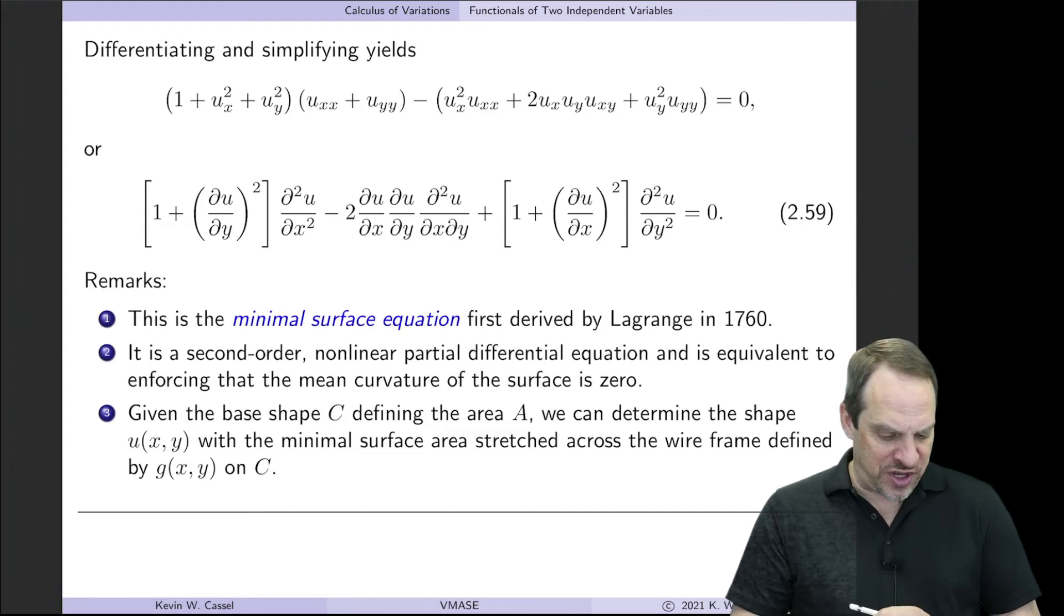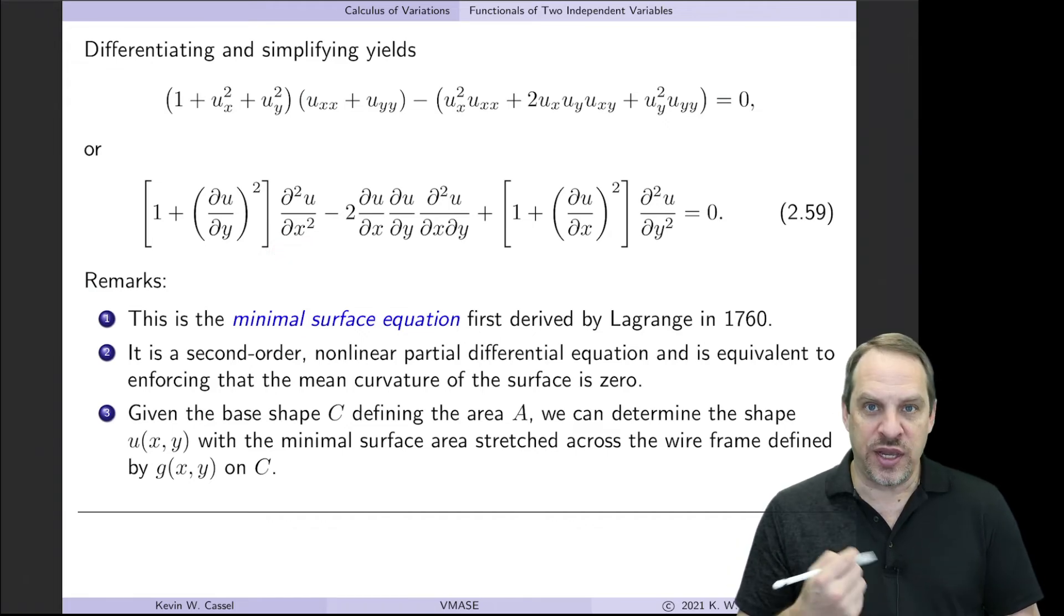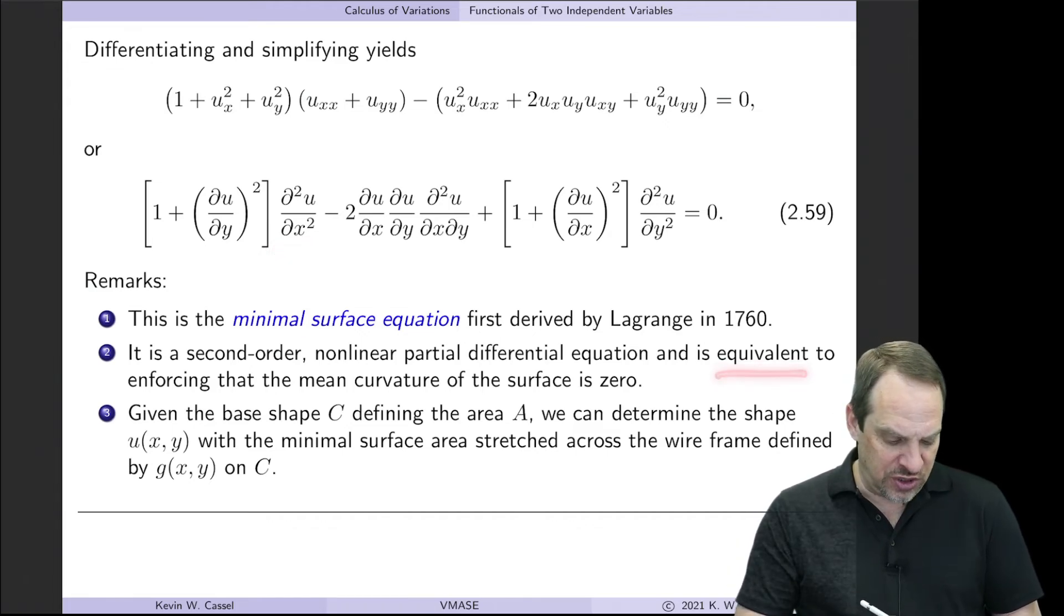Now as I said, it is a rather messy equation. It's second order. The highest order of derivatives are second order. It's nonlinear, because I have these squares of partial derivatives, and they're times partial derivatives, so it's also nonlinear. And it's also actually equivalent to if you were to enforce that the mean curvature of the surface is zero.